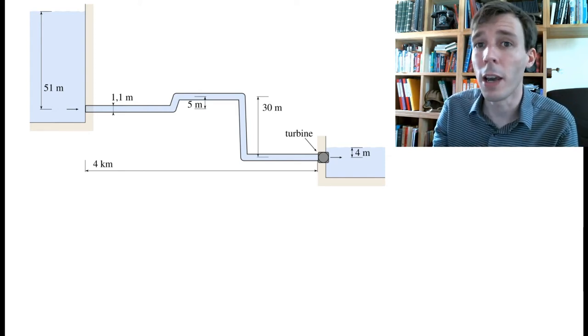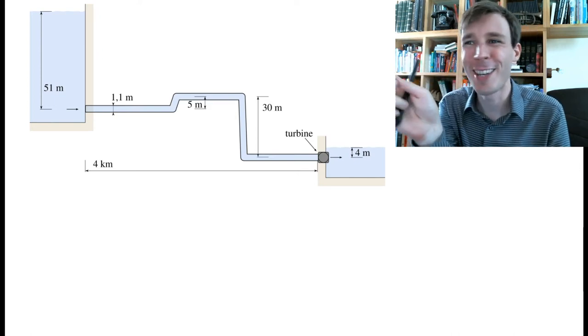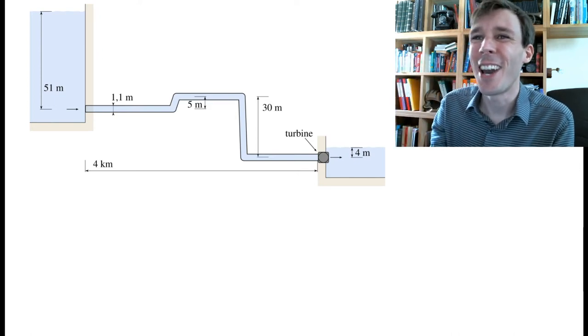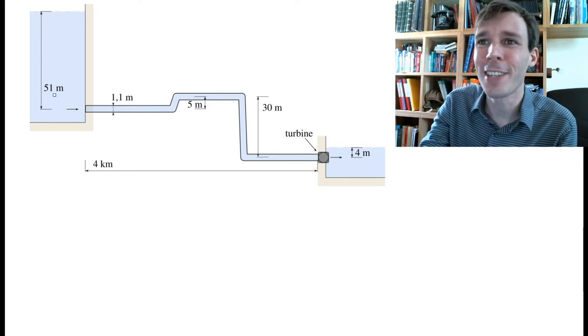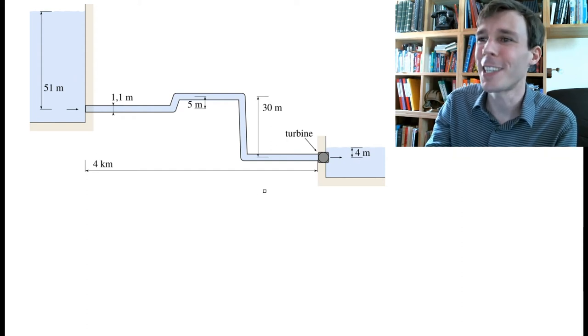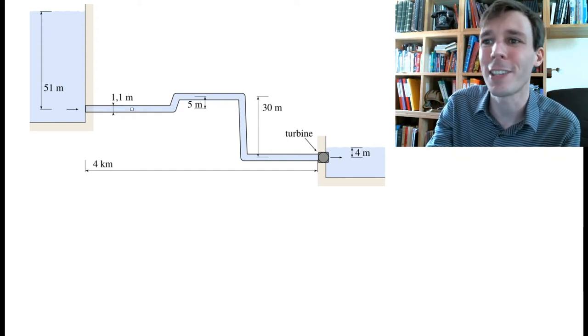So we have a tank like shown on this side of the picture with one very large tank on the left, one small tank on the right, and the turbine is here with a pipe in between.